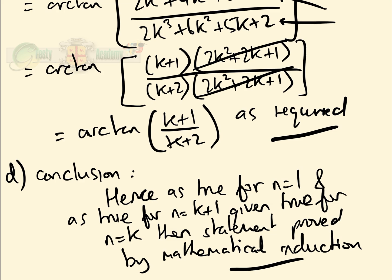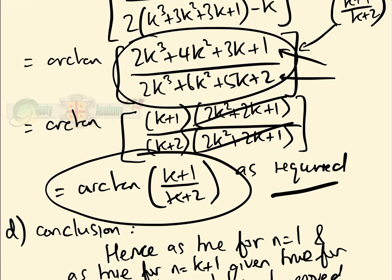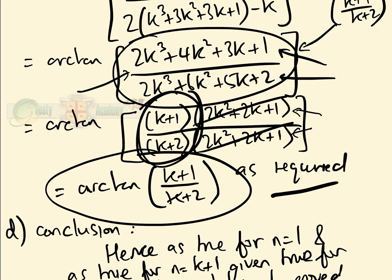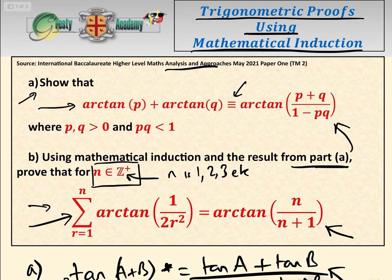This is a very good example of how vital it is to know where you're going in these proofs, especially in part C. Otherwise it's not clear at all where you should go. But if you look at where you have to get to, as long as you haven't made a mistake, k plus 1 and k plus 2 must come out as factors. So in the heat of an exam, just take them out as factors and they must cancel — unless you've made a mistake. I hope you found this useful. Please like this video and subscribe to the Gressy Academy YouTube channel.